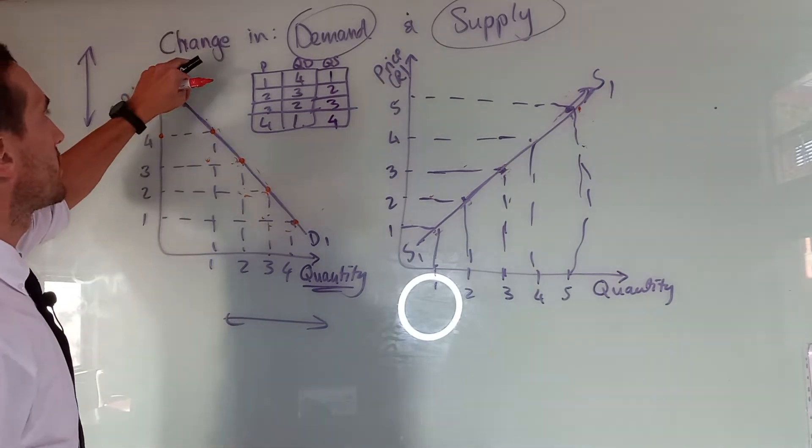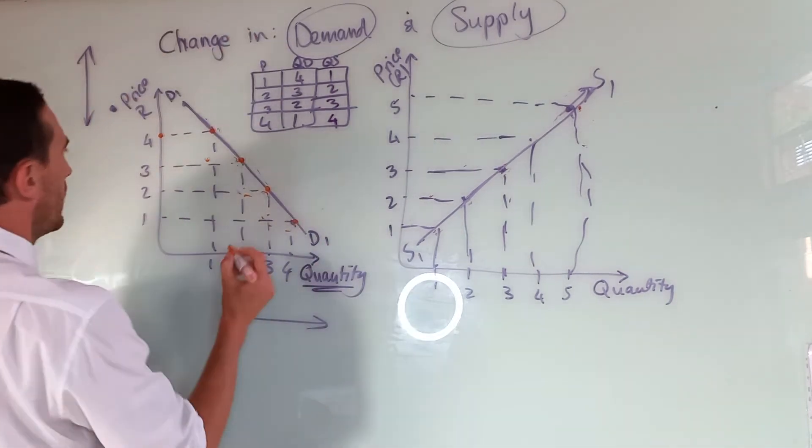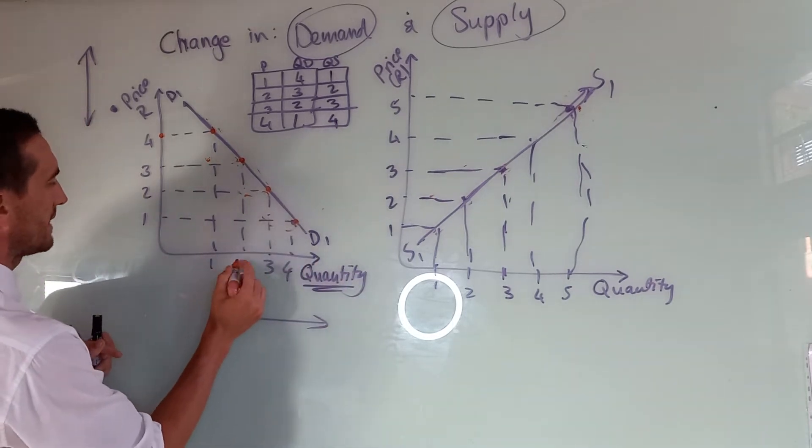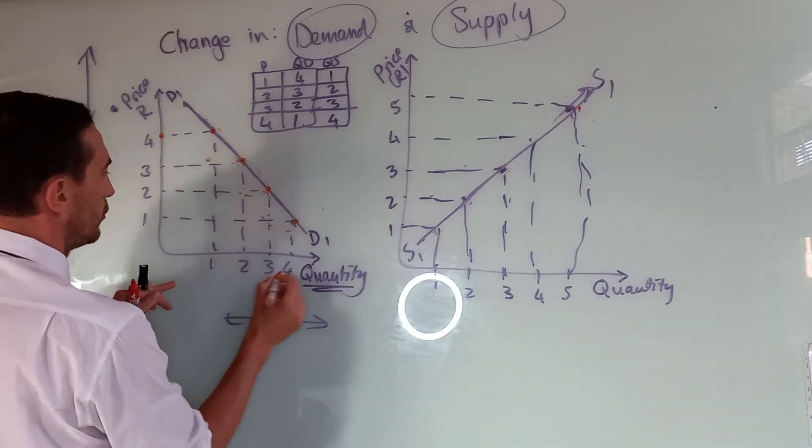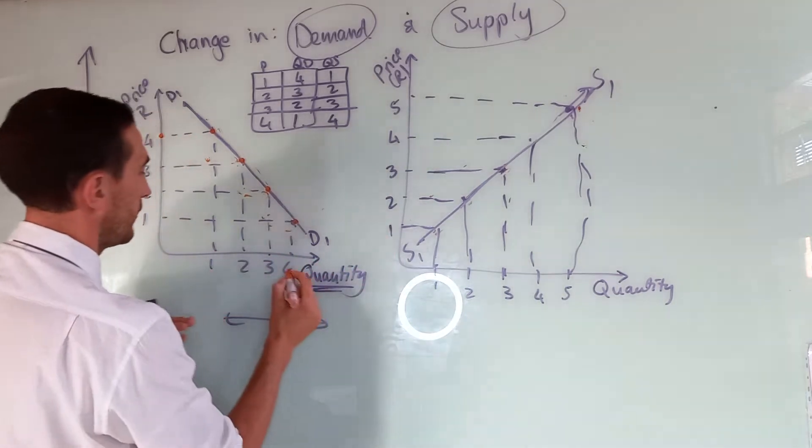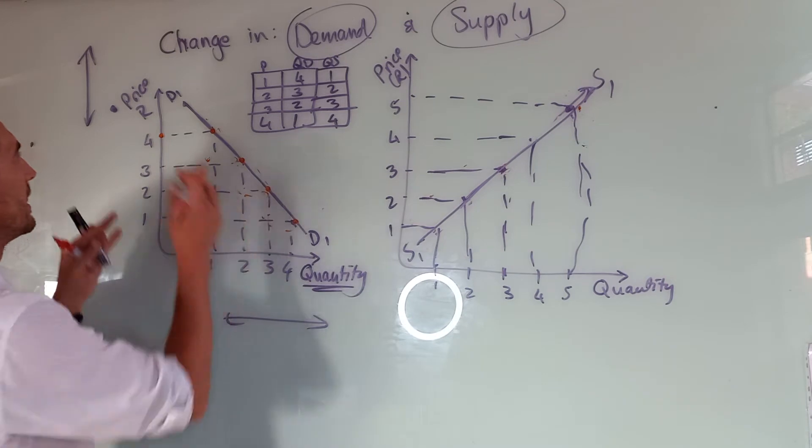But today, we talk about a change in the quantity demand. What happens if there's a change in the quantity of a demand of a product? What would be the cause if there's a change in quantity demand? So let's look at demand.